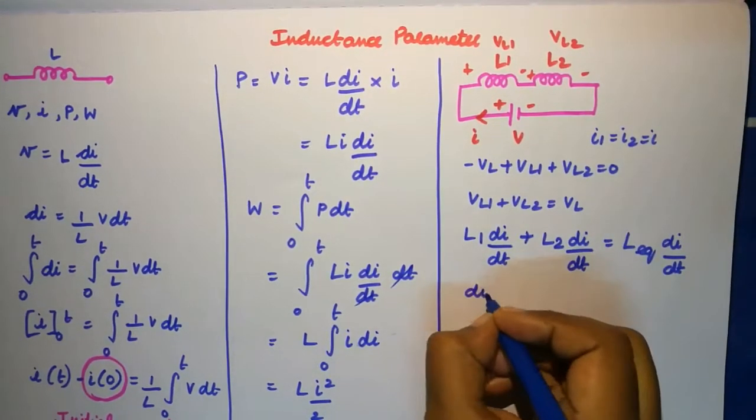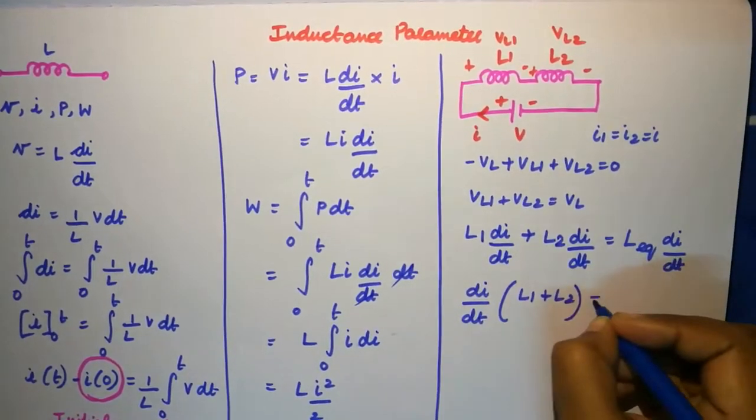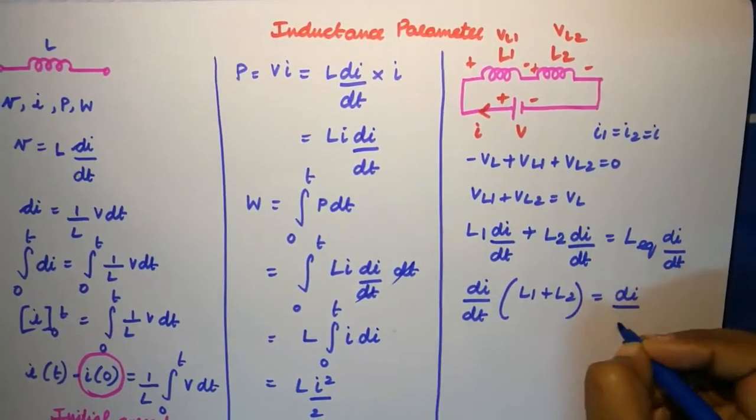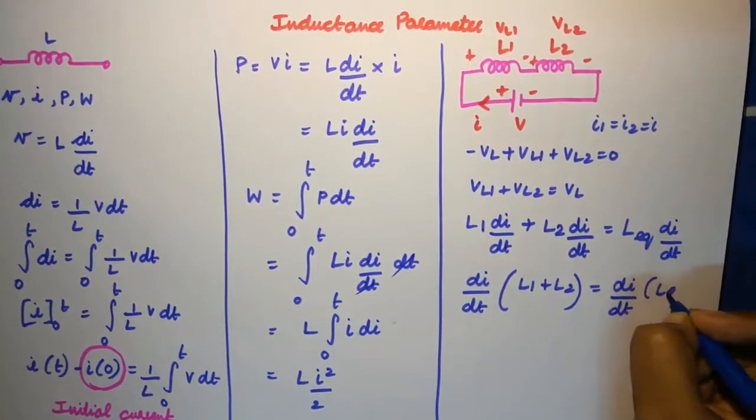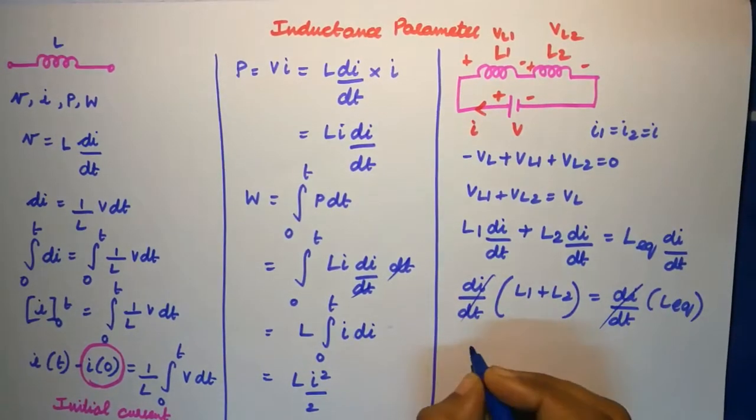Now when I take di by dt common on both LHS and RHS, I would end up with an equation where I can cancel my di by dt and simply say